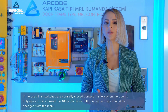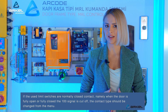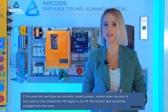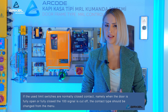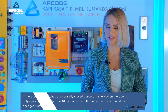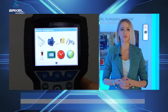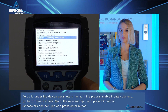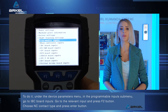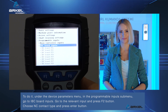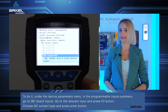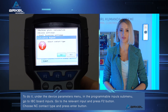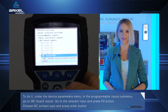If the used limit switches are normally closed contact — meaning when the door is fully open or fully closed the 100 signal is cut off — the contact type should be changed from the menu. To do it, under the Device Parameters menu, in the Programmable Inputs submenu, go to IBC Board Inputs. Go to the relevant input and press the F2 button. Choose NC Contact Type and press the Enter button.